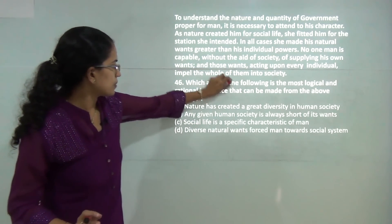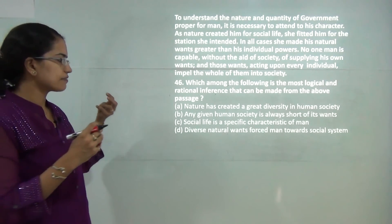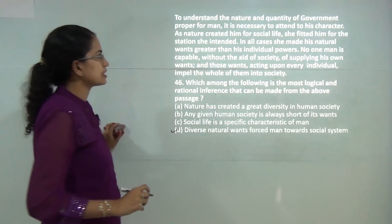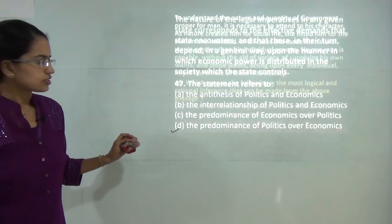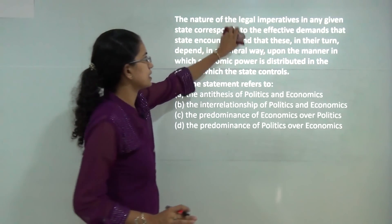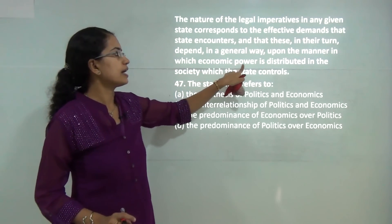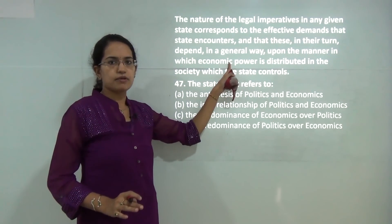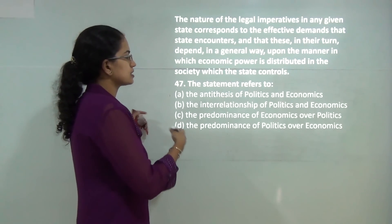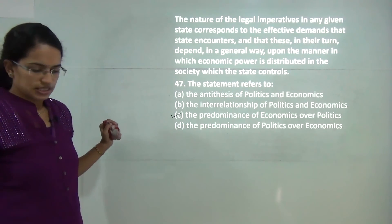The next passage talks about a balance between nature and how diverse natural forces drive man towards the social system, so D is the correct answer. The following question talks about legal imperatives helping to create effective demand for the state, which can be achieved only by distribution of economic power. That means distribution of economic power predominates politics, so predominance of economics over politics is the correct answer.